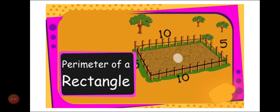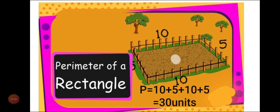In the picture on your screen, you can see a lawn or a ground which is a four-sided ground, and the length of all four sides is given. The four sides are 10 meters, 5 meters, 10 meters, and 5 meters — so we can say it is in the shape of a rectangle. To find the perimeter of this rectangular ground, we take the sum of all four sides: 10 plus 5 plus 10 plus 5, which equals 30 units.